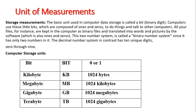When we have approximately a thousand bytes, they become a kilobyte. When we have approximately a million bytes, that becomes a megabyte. A billion bytes becomes a gigabyte, and a trillion bytes becomes a terabyte. So byte, kilobyte, megabyte, gigabyte, and terabyte are the units of measure of data storage capacity. For example: this device can store one terabyte, or one gigabyte, or 25 megabytes of data.